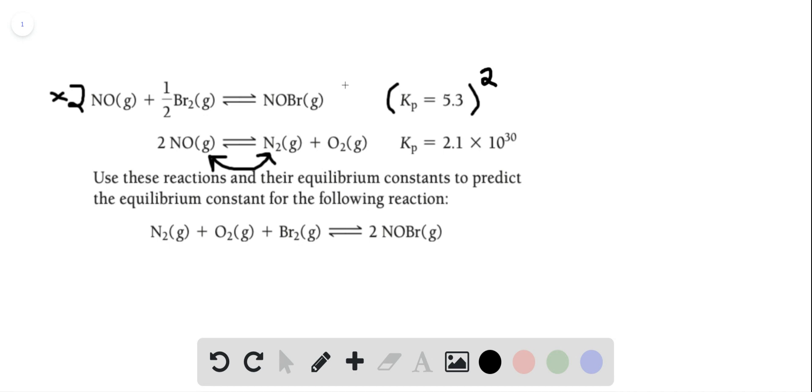Because the equilibrium constant exponent is determined by the coefficient in front of each chemical. Since we're putting a two in front of each chemical by multiplying this reaction by two, that's the same as multiplying the exponents by two. And you can do that by squaring the total equilibrium constant.